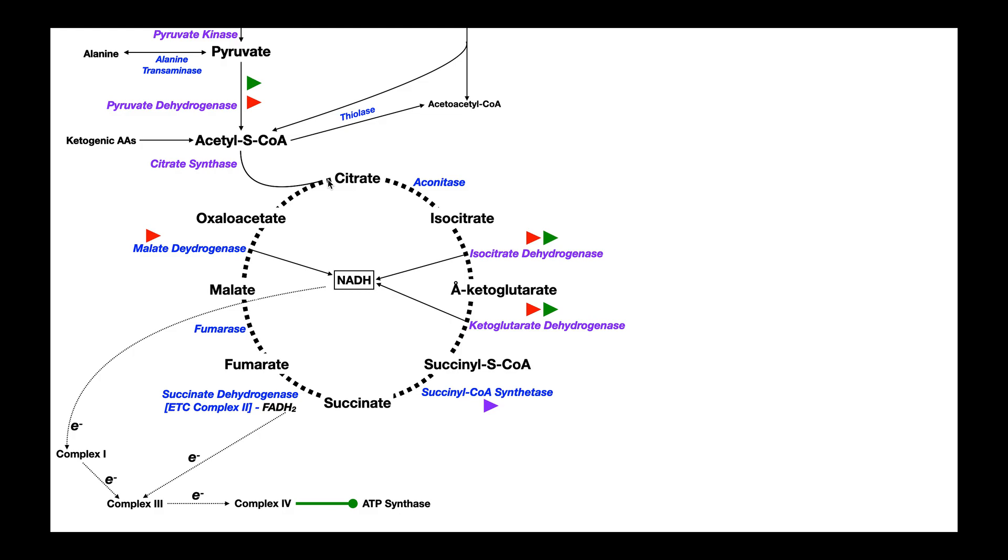So what does beta-oxidation do for us? It metabolizes fatty acids into acetyl-CoA, which enter the citric acid cycle. But remember, it also gives us some NADH and FADH2. Remember from the previous video, those power the electron transport chain, which then powers ATP synthase, which gives us a humongous amount of ATP.